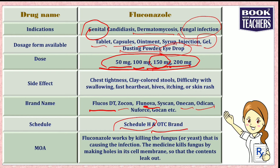Now we will see the mode of action by which fluconazole works. It works by killing the fungus or yeast that is causing the infection. It kills the fungus by making holes in the cell membrane of the fungus, so that the harmful contents can leak out from the membrane and healing takes place.